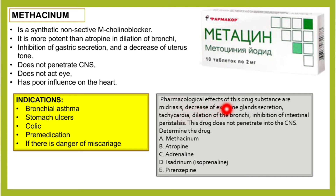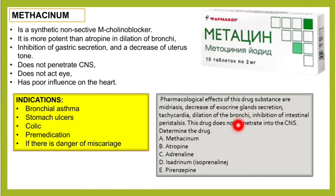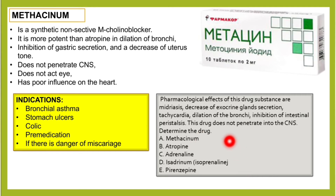A KROK exam question asks: pharmacological effects include mydriasis, decrease of exocrine gland secretion, tachycardia, dilation of bronchi, inhibition of intestinal peristalsis — and this drug does not penetrate the CNS. The answer is metacine. Atropine can cross the CNS, and pyrenzepine belongs to the same group but is different.